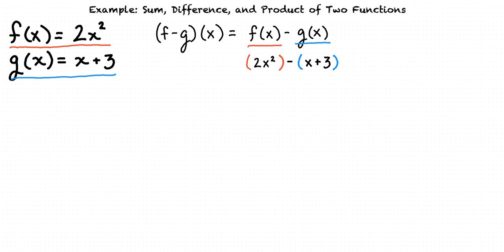Next, we will simplify by distributing the negative sign to the x plus 3 inside the parentheses. This results in 2x squared minus x minus 3, which is our answer.